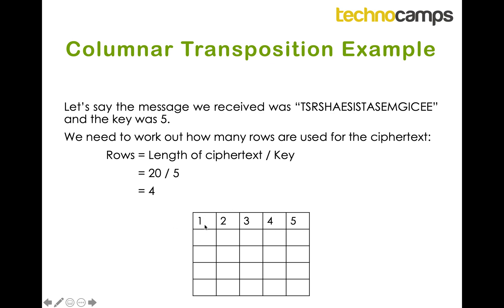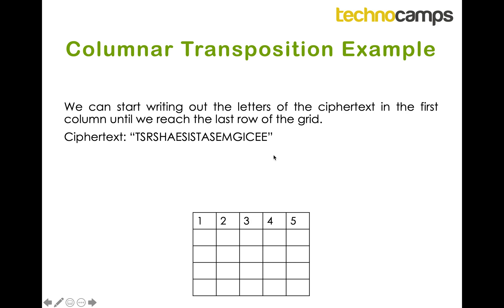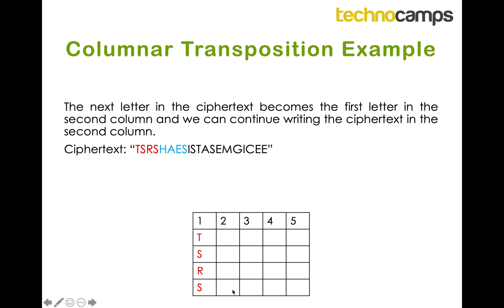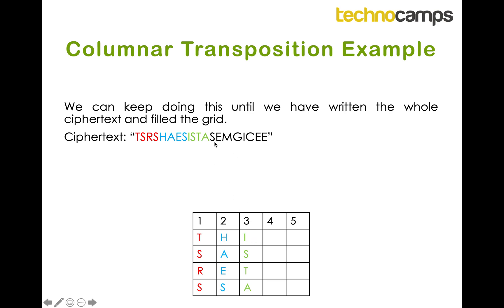I've added a row at the top with column numbers just to make it easier. I take my cipher text and start writing it into the first column — the first four letters T, S, R, S go into column one. Once I reach the end of that column I take the next four letters H, A, E, S and fill column two. I then continue, taking the next four for column three, the next four for column four, and the final four for column five.